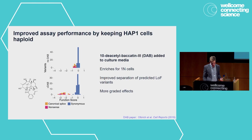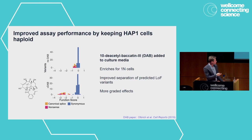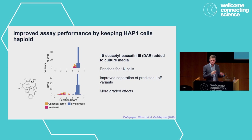One key technical point: we rely on haploid cells being haploid to get a reliable measurement of function. We found that adding a drug called DAB to our culture media had the effect of purifying the cells — we can actually see them get smaller under the microscope. This purifies the haploid population, preventing the known phenomenon of cells reverting to diploidy. When we do this, the effect size for VHL goes from quite small to much larger, and we also see more graded effects. We see no major distortions caused by adding the drug.